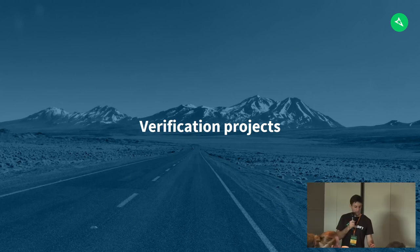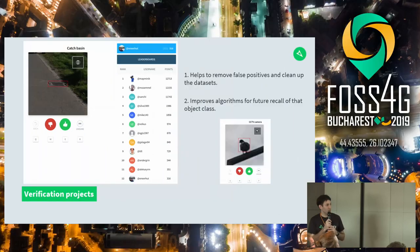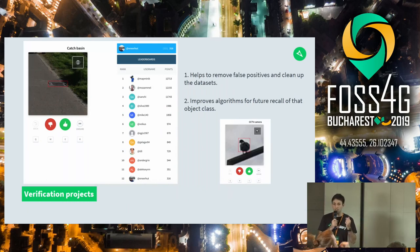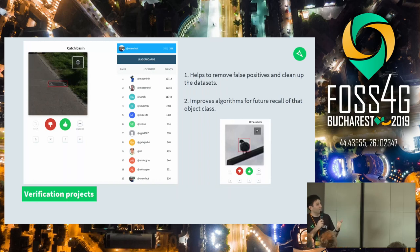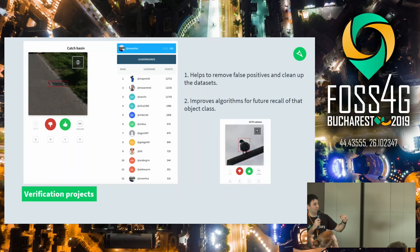One really cool thing we're doing now — part of these projects — is what we call verification projects. If we have an incorrectly detected object, like a bench in Austin, we can create a shape around it and ask the community to validate whether objects have been identified correctly. People can tick yes, no, or unsure. This removes false positives — for example, a pigeon we thought was a CCTV camera — so when you download the list of CCTV cameras in that area they'll all be correct. It also improves the algorithm once we rerun the training data.